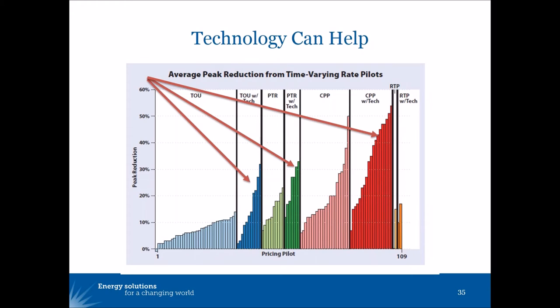What you see is that enabling technologies like automated thermostats and remotely controllable appliances do make a difference in the peak demand that customers experience. The technologies make all of these rate designs more effective at reducing demand.